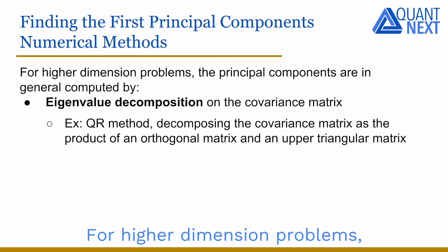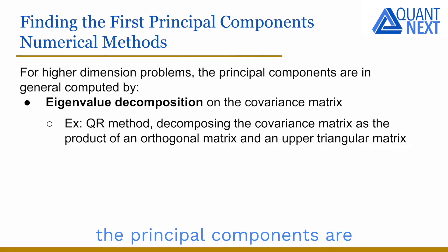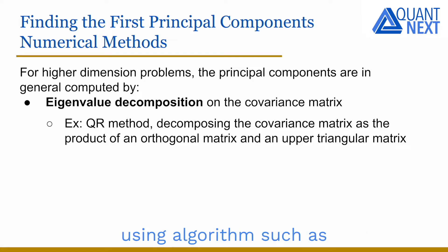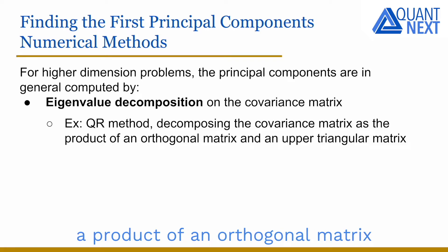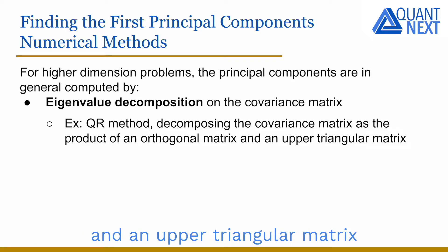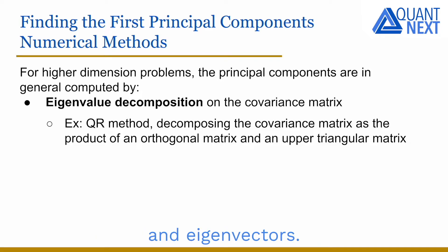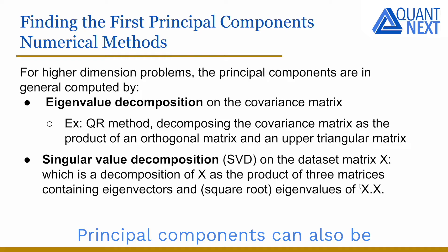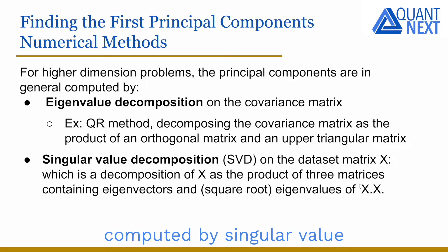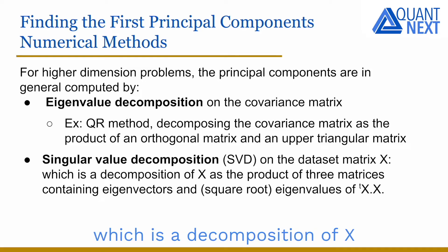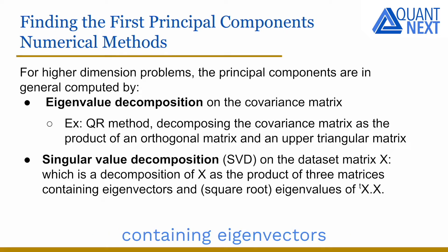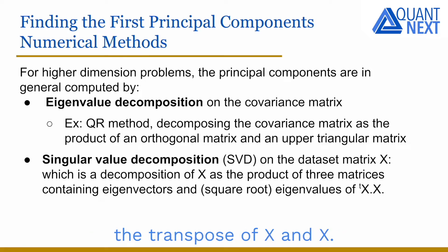For higher-dimension problems, the principal components are in general computed by eigenvalue decomposition on the covariance matrix using algorithms such as the QR method, which decomposes the covariance matrix as the product of an orthogonal matrix and an upper triangular matrix to determine the eigenvalues and eigenvectors. Principal components can also be computed by singular value decomposition, or SVD, on the dataset matrix X — a decomposition of X as a product of three matrices containing eigenvectors and square roots of eigenvalues of the product of the transpose of X and X.